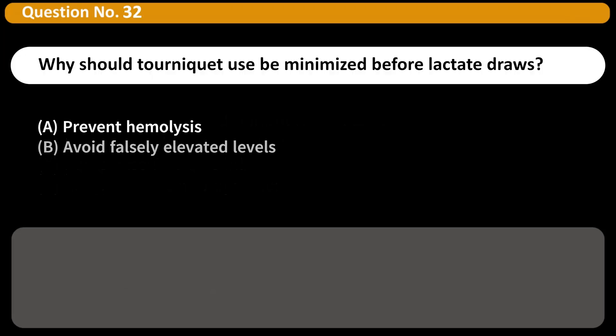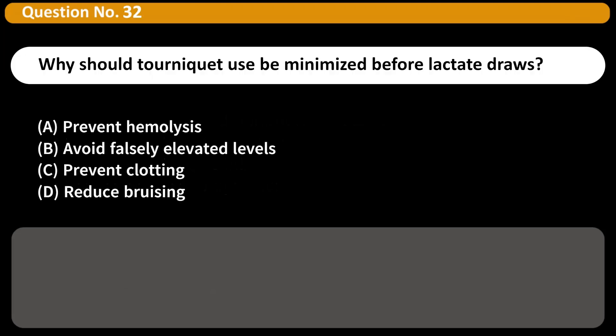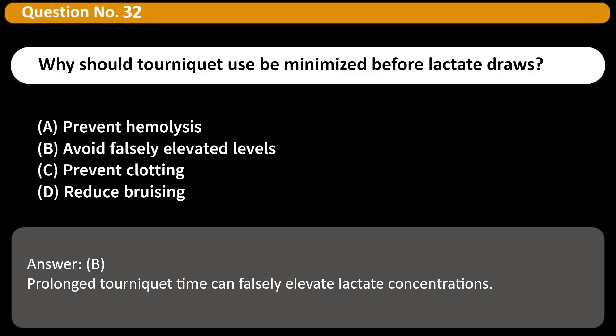Why should tourniquet use be minimized before lactate draws? A. Prevent hemolysis. B. Avoid falsely elevated levels. C. Prevent clotting. D. Reduce bruising. Answer: B. Prolonged tourniquet time can falsely elevate lactate concentrations.